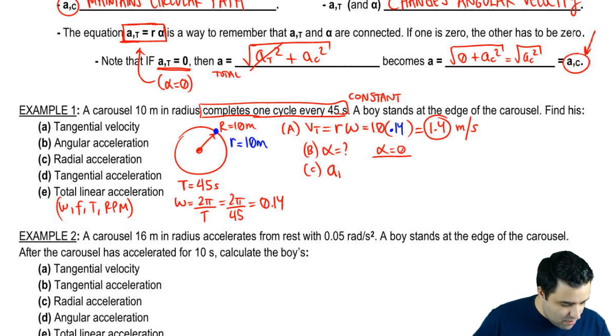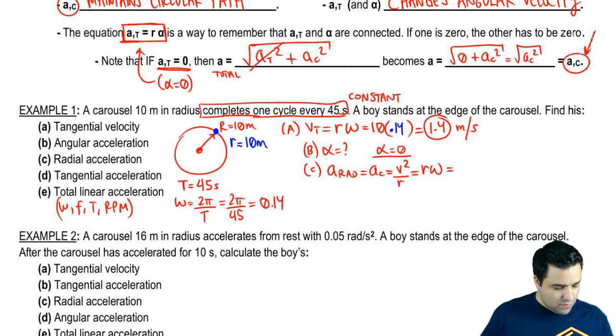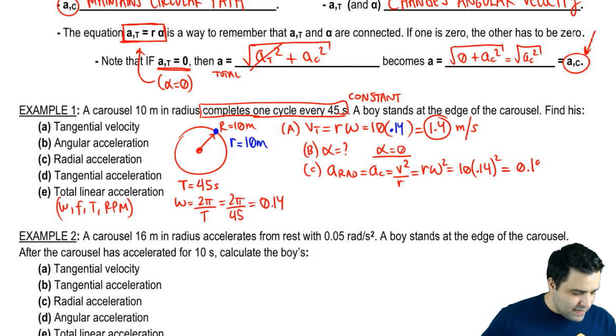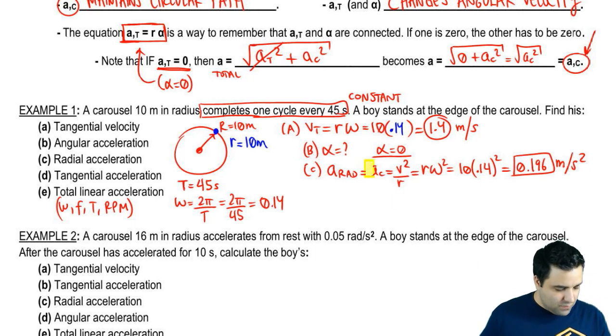Radial acceleration is ARAD, which is the same as AC, which is V squared over R, or R omega squared, whichever you prefer. So I'm going to use R omega squared just so I don't have to square this number, but it's the same exact thing. R is 10 and omega is—it's R omega squared. I was like, hey, that's the same thing. So I'm going to have to square something either way, 0.14 squared. But anyway, if we do this, we get that the answer is 0.196 meters per second squared. I almost used the wrong equation there. Either one of these works.